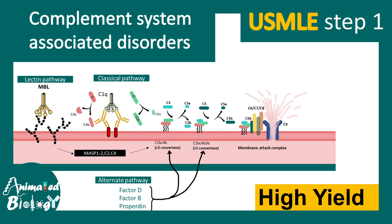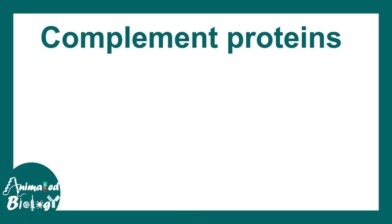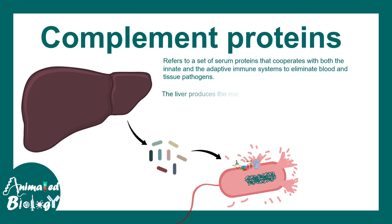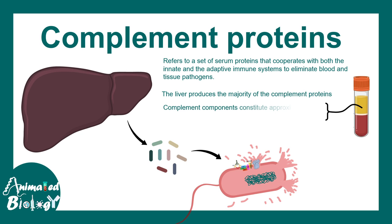In this video, we'll talk about the complement system and the associated disorders. This is for USMLE Step 1 and this is a high yield video. Complement proteins are a set of proteins that cooperate between the innate and adaptive immune system to eliminate pathogens like bacteria. These complement proteins are generated by the liver and they comprise about 15% of the globulin protein in the plasma.